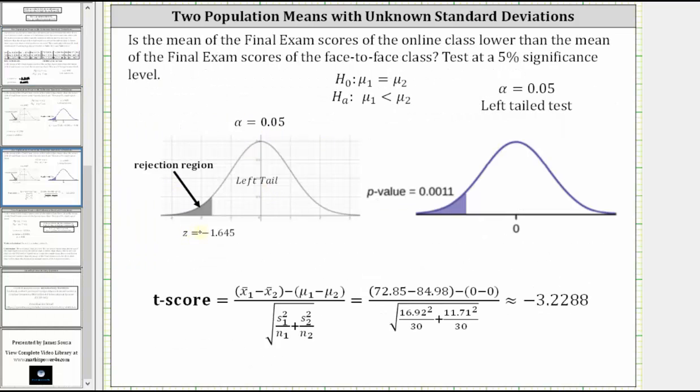Next, we would calculate the t-score using the formula shown here. Notice how this requires us to find the sample means and the sample standard deviations. We also assume μ₁ minus μ₂ is equal to zero.